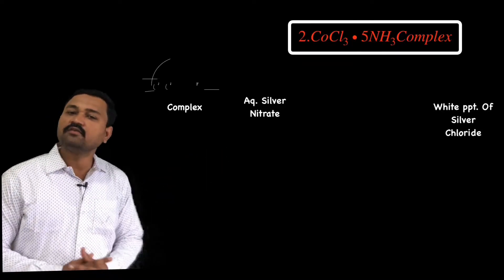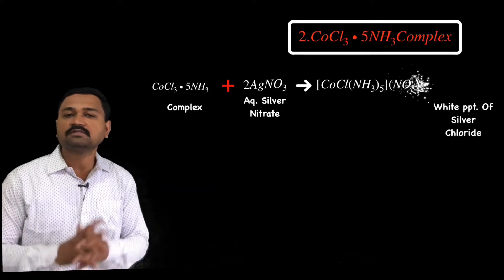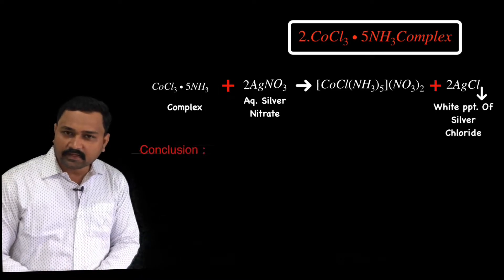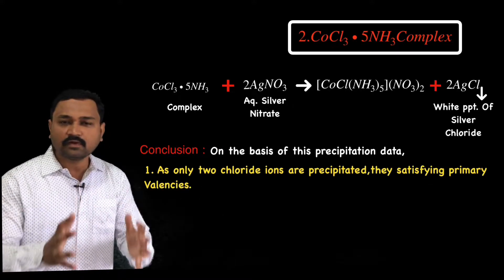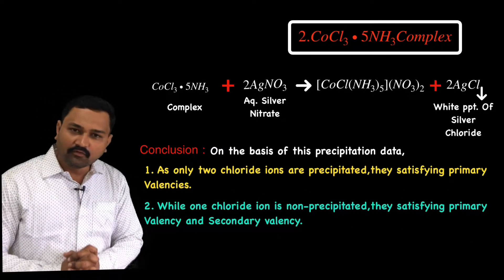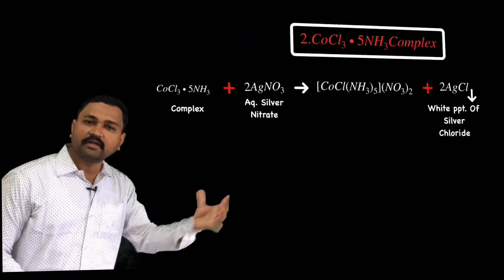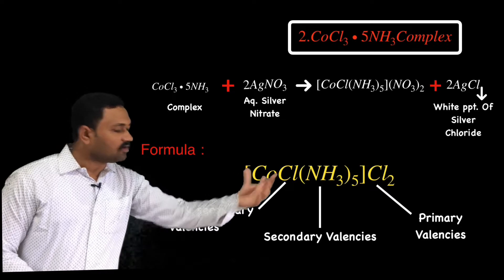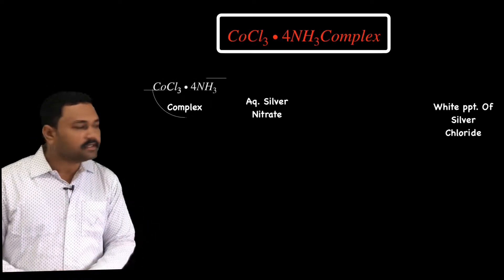The second complex is CoCl₃·5NH₃. When treated with aqueous silver nitrate, it gives two moles of silver chloride as a white precipitate. Werner concluded that two valencies are satisfied by two chloride ions as primary valencies, while the remaining one chloride ion and five ammonia molecules satisfy the secondary valencies. Hence he formulated this coordination compound as [Co(NH₃)₅Cl]Cl₂.